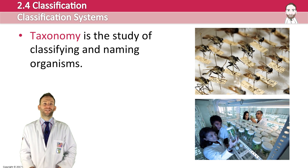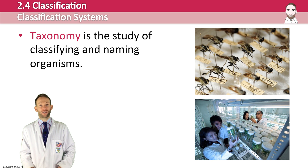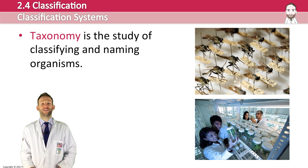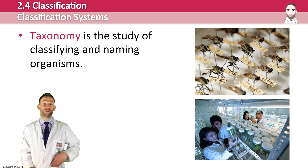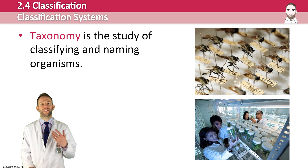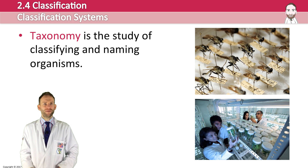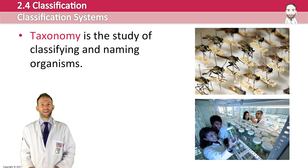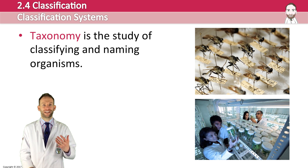There are lots of different classification systems, just like there are different ways of defining what a species is. There are different ways to classify organisms — basically putting them into different groups. The study of how that works is called taxonomy: the study of classifying and naming organisms.